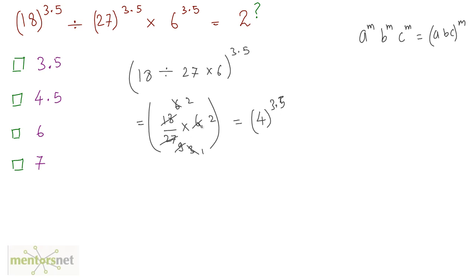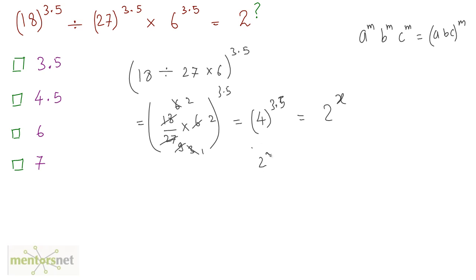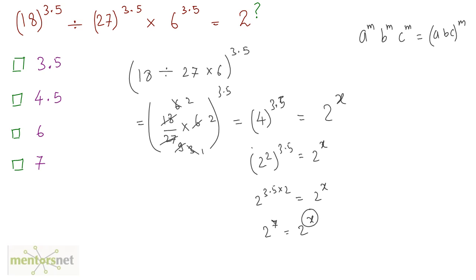This is also raised to 3.5. So 4 raised to 3.5 is equal to 2 raised to x. Since 4 can be written as 2 squared, we have 2 squared raised to 3.5 equals 2 raised to x, so 2 raised to 3.5 times 2 equals 2 raised to x. Since 3.5 times 2 is 7, we get 2 raised to 7 equals 2 raised to x. Therefore x equals 7.